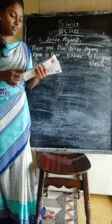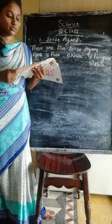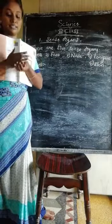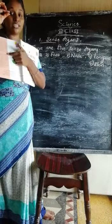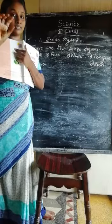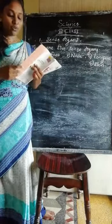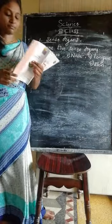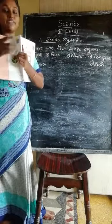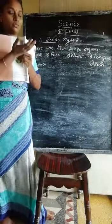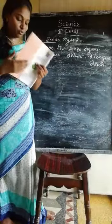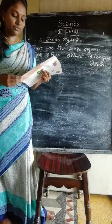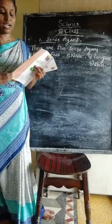Never touch our eyes with dirty hands. You should not touch the eyes with dirty hands like this. Wash your eyes every day with cold and clean water. Wash your face and wash your eyes properly. You should include more leafy vegetables in your diet for good eyesight.